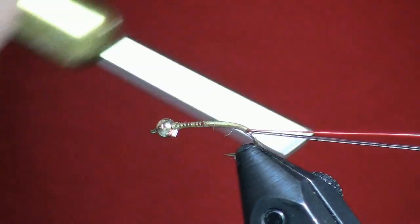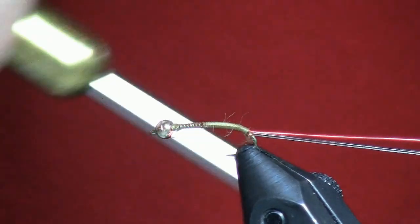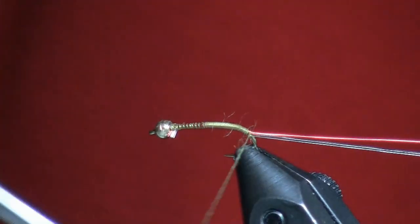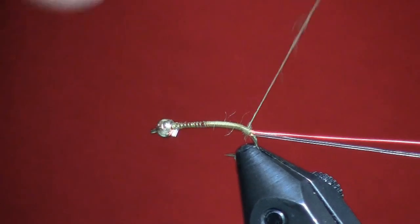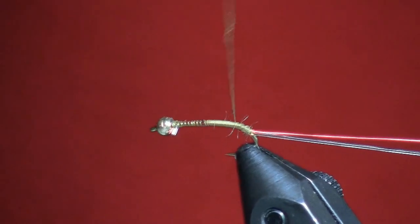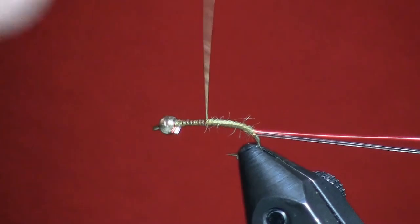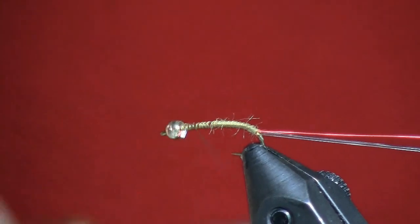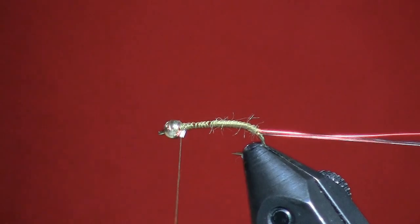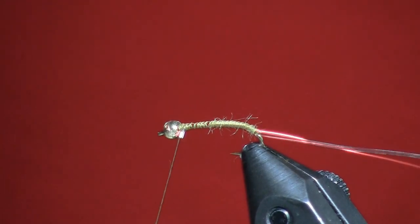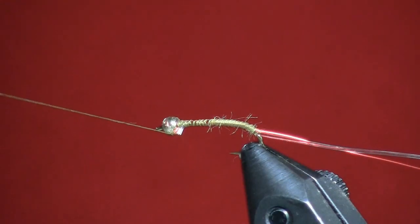As you'll see I'm tying here a 14 natural bend hook that is going to sink. I put a tungsten bead on it which may be more bead than you really need, but it's kind of nice for purposes of demonstration.